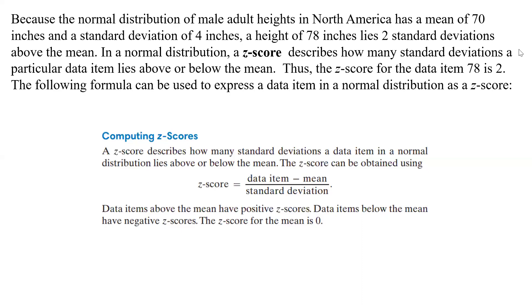Because the normal distribution of male adult heights in North America has a mean of 70 inches and a standard deviation of 4 inches, a height of 78 inches lies two standard deviations above the mean.